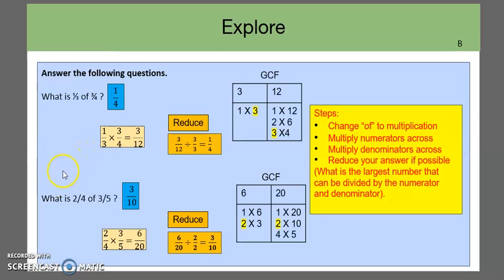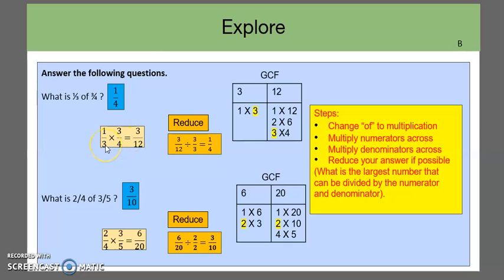Here we have the problems worked through so we can check our answers. For the first problem, what is one-third of three-fourths? Remember, the first step is to change of to multiplication. So we have one-third times three-fourths. Then we multiply the numerators across: one times three equals three. Then we multiply the denominators across: three times four equals twelve. So we get three-twelfths.